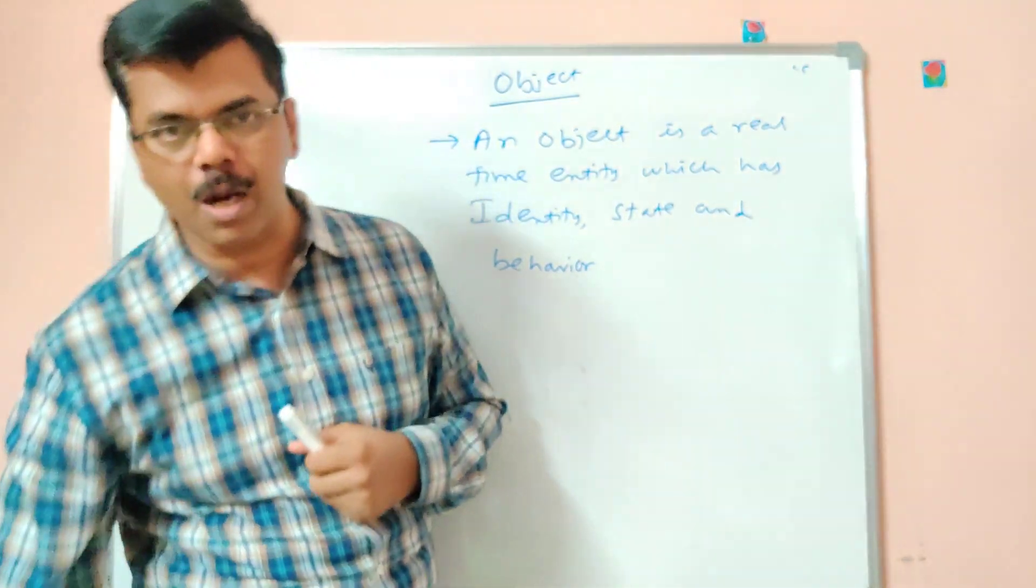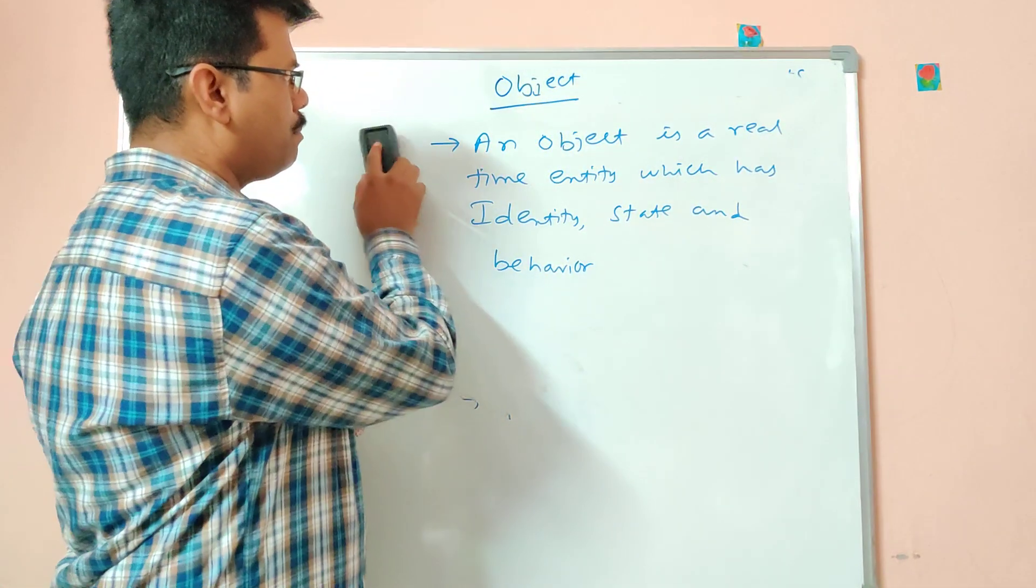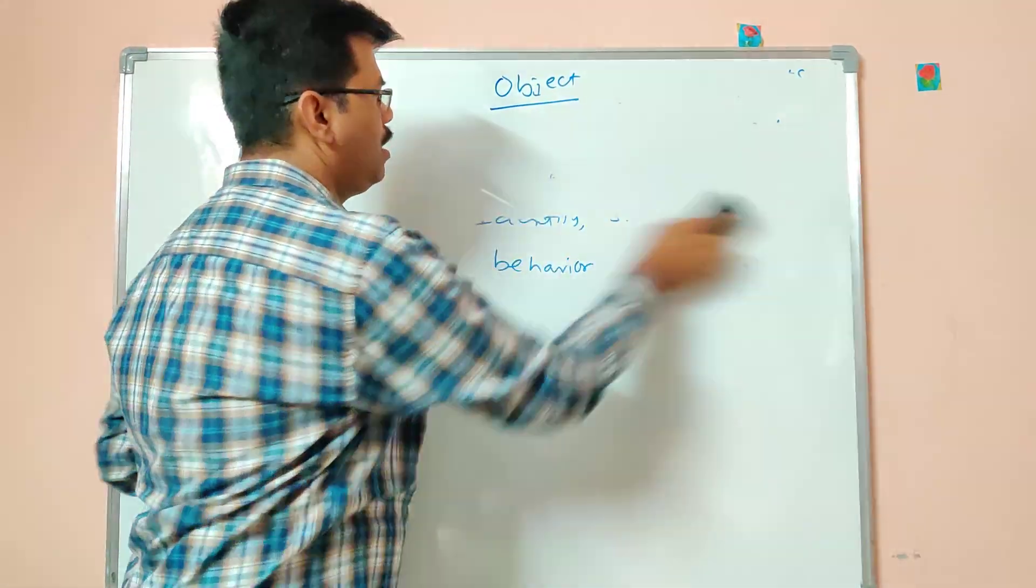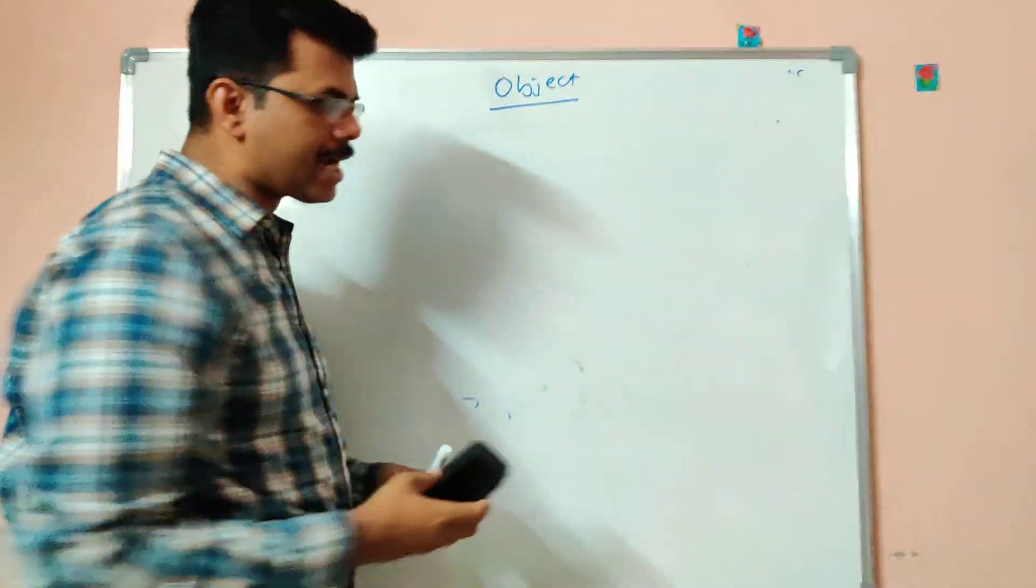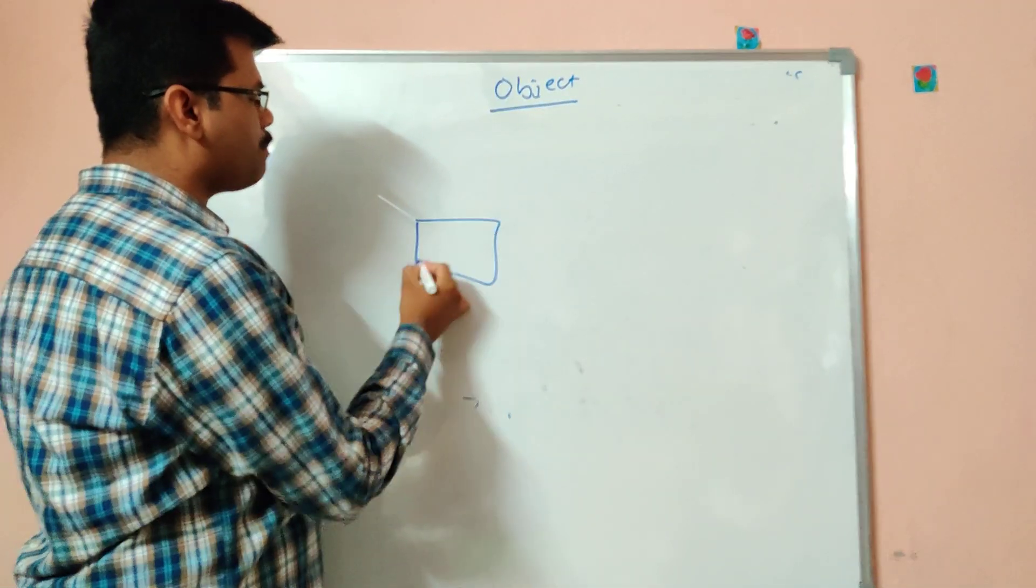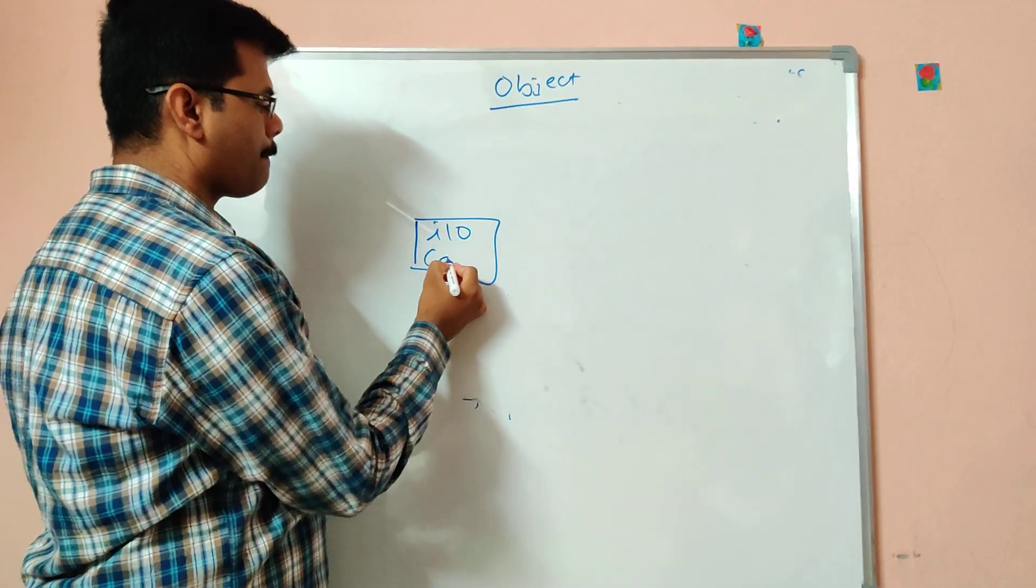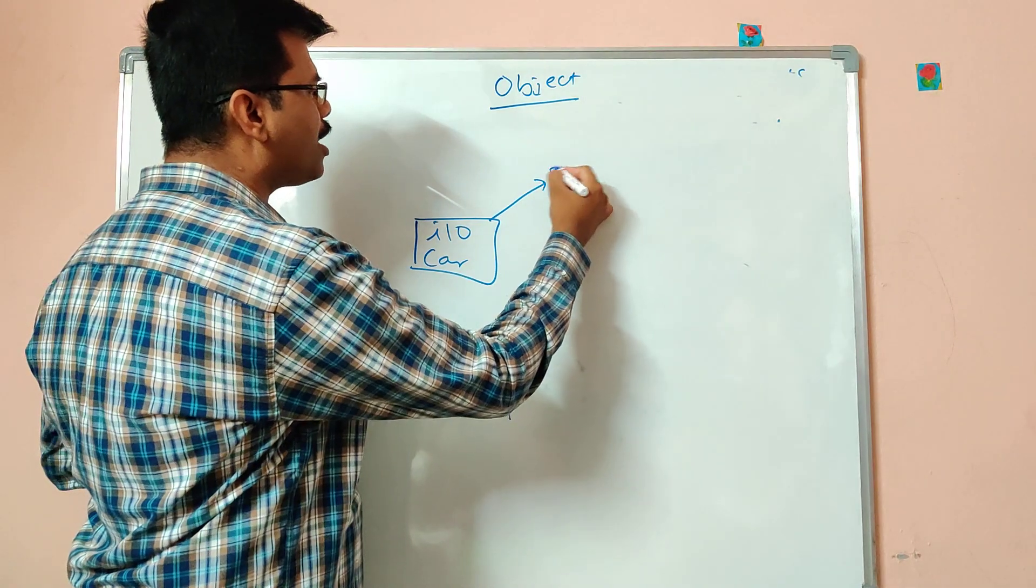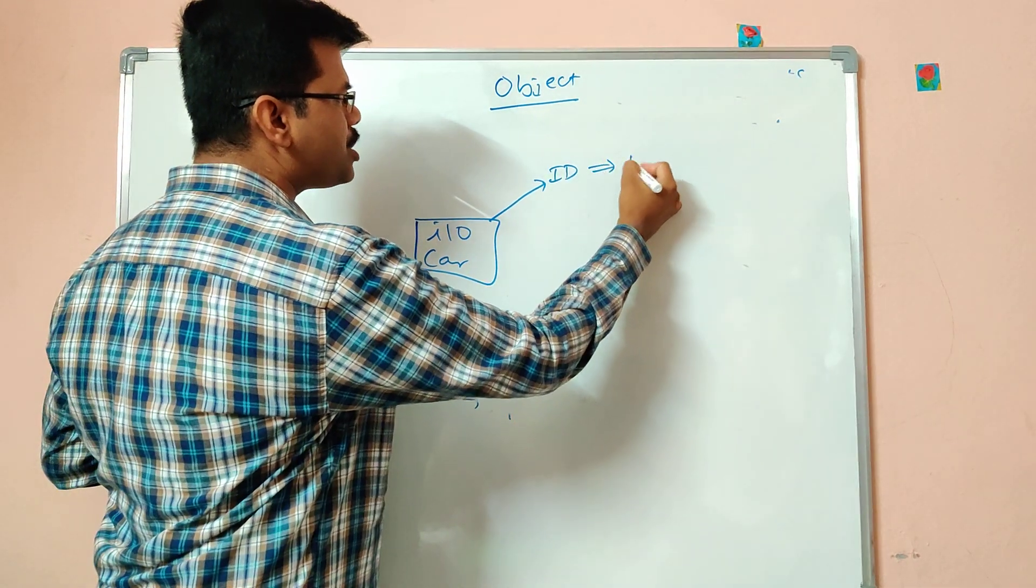So let us understand more of this object by using a diagram. Let me consider an object like a car. Let me go with a car. Like example like Hyundai car. So how to identify a car uniquely? By using the registration number.